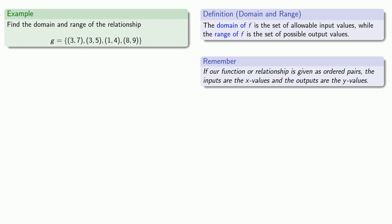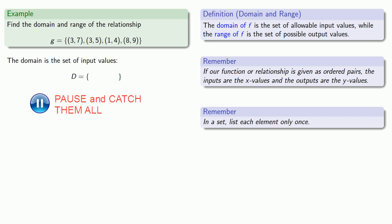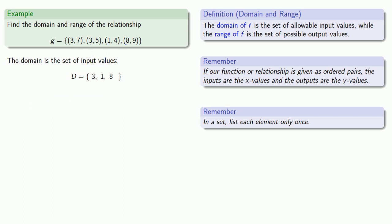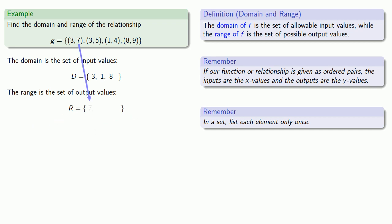Or we might take another example. Here it's useful to keep in mind that in a set we should list each element only once — we don't need to list an element more than once. So the domain is the set of input values, which will be {3, 1, 8}, where even though we have two 3's as inputs, we don't need to list them twice. The range is the set of output values, and so the range will be {7, 5, 4, 9}.